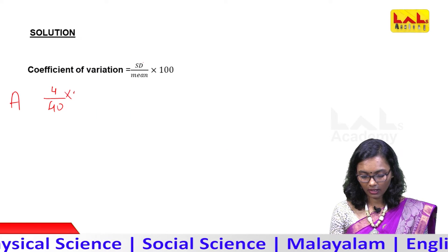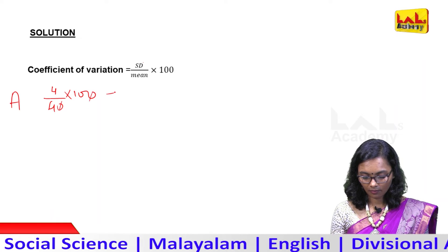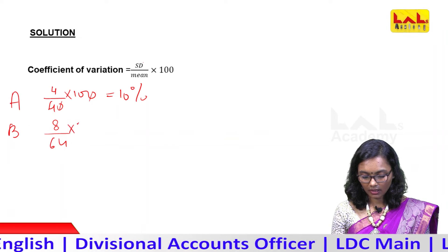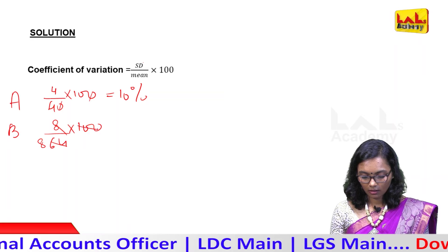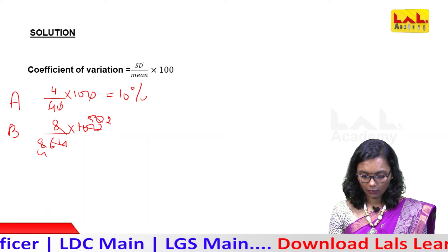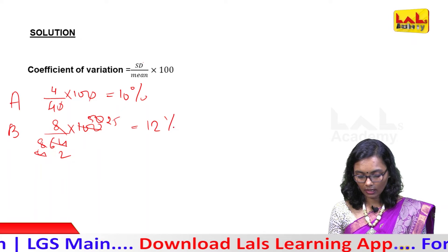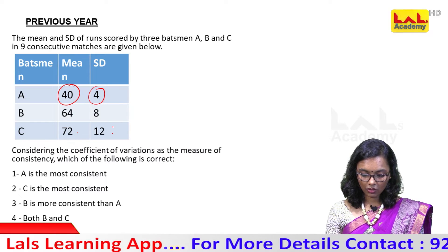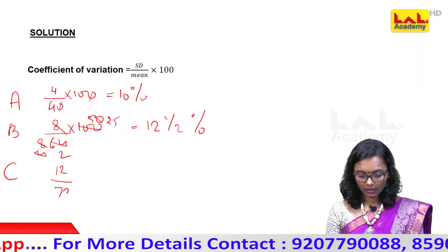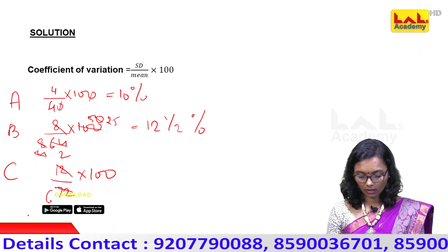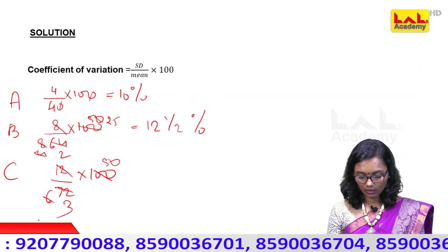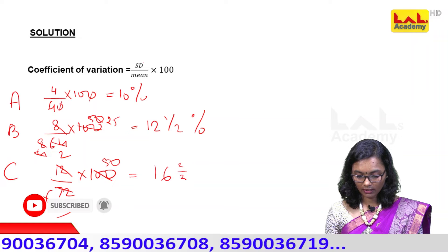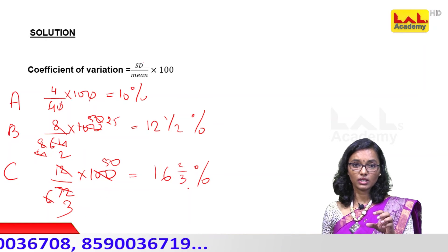For A: 4 divided by 40 into 100 equals 10%. For B: 8 divided by 64 into 100 equals 12.5%. For C: 12 divided by 72 into 100 equals 50/3, which is approximately 16 and 2/3 percent. So that is the Coefficient of Variation for each batsman.